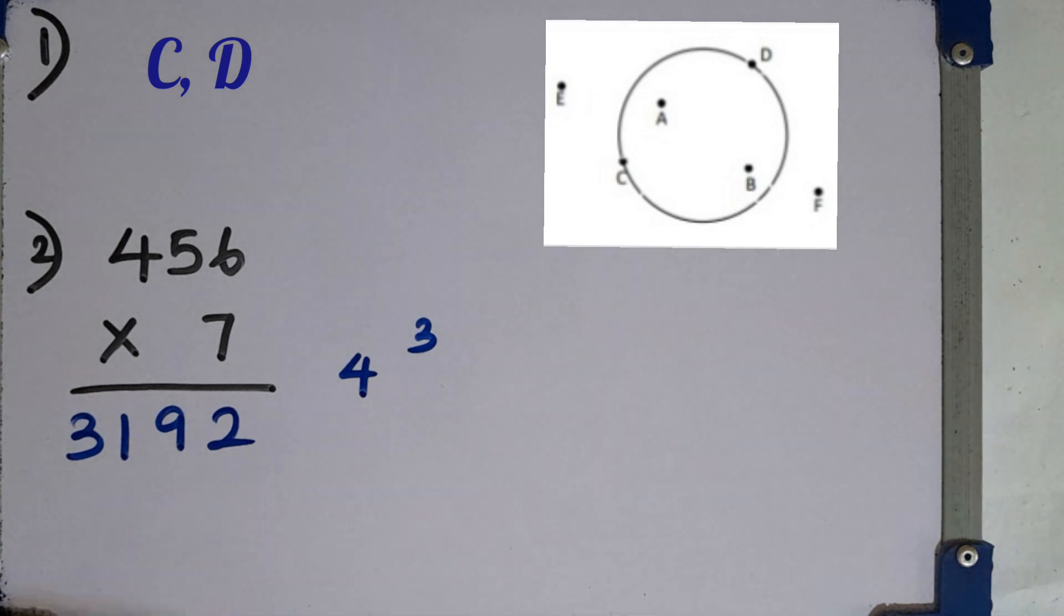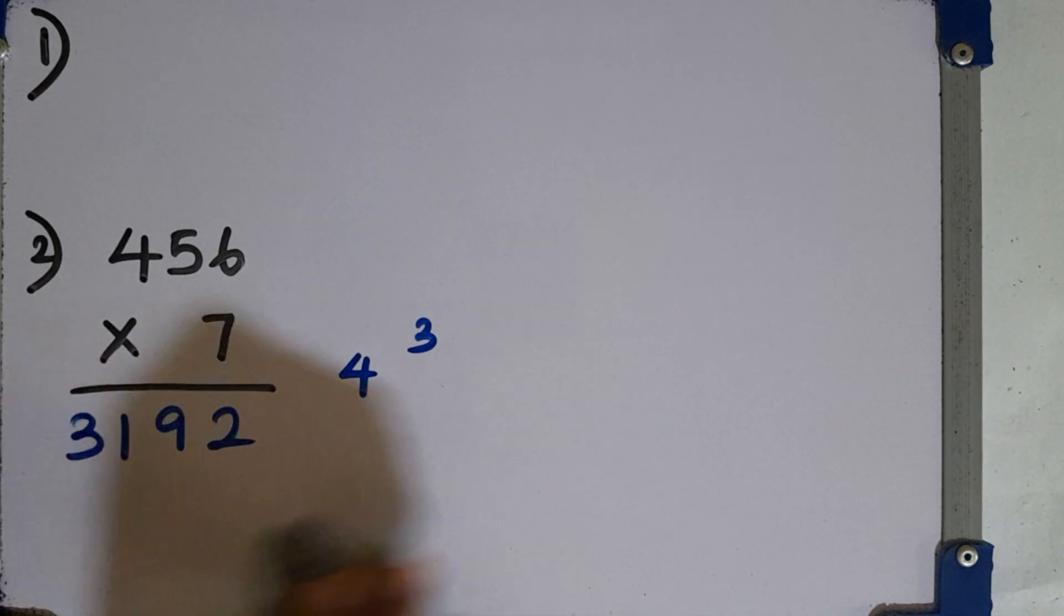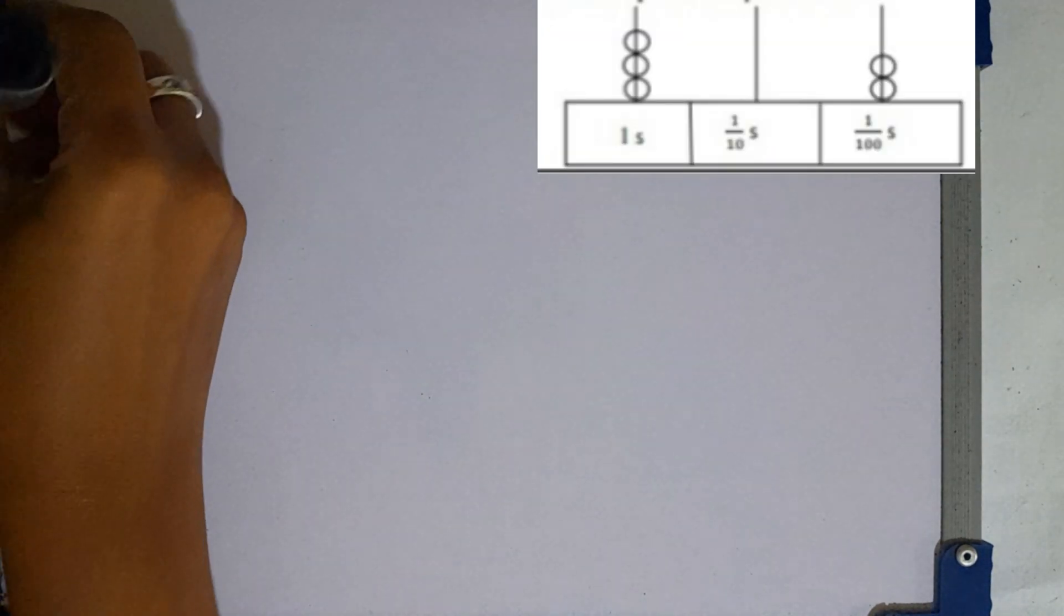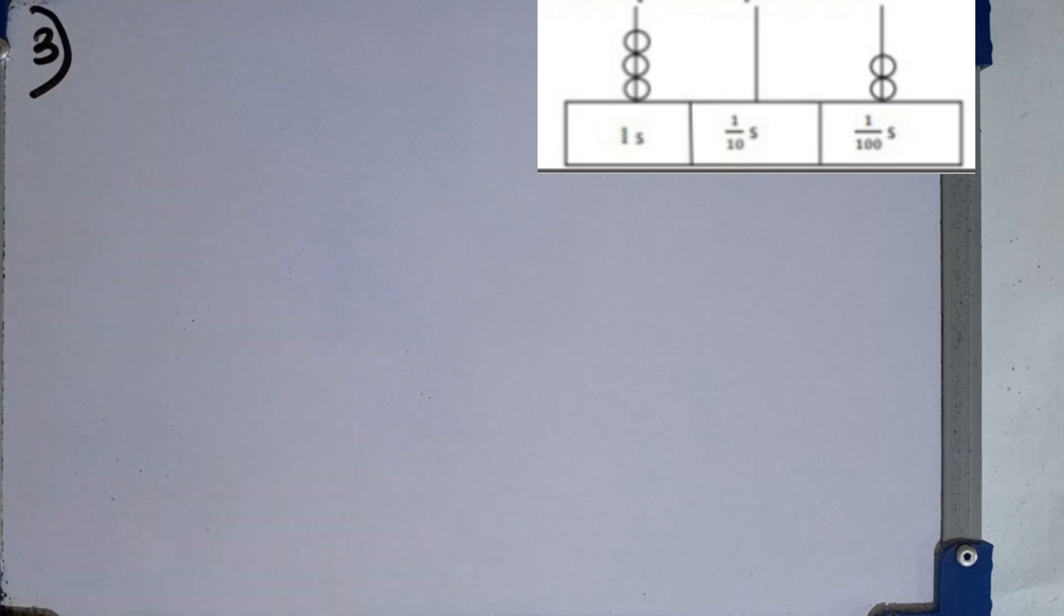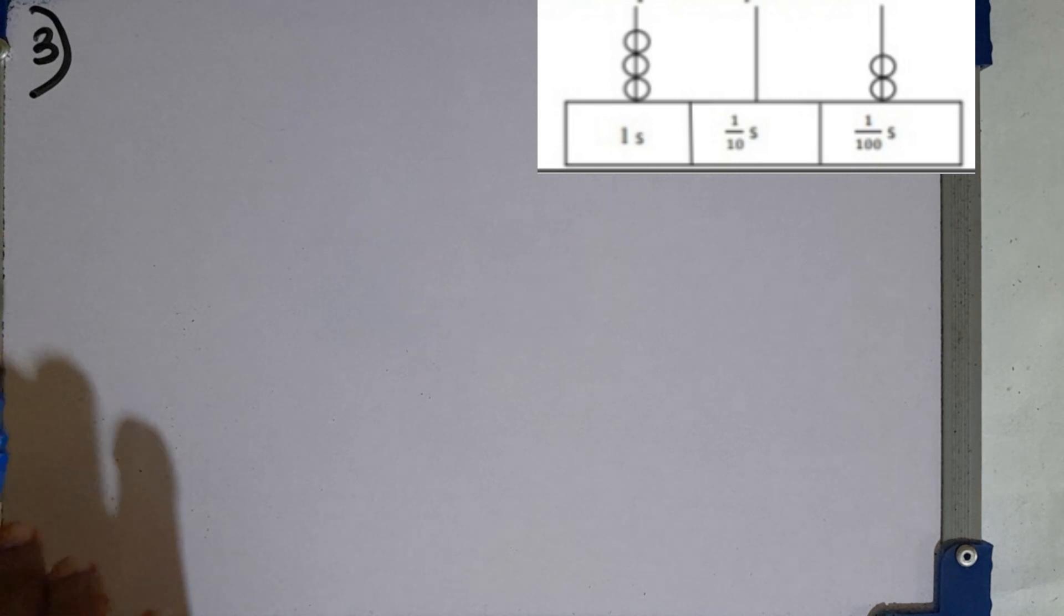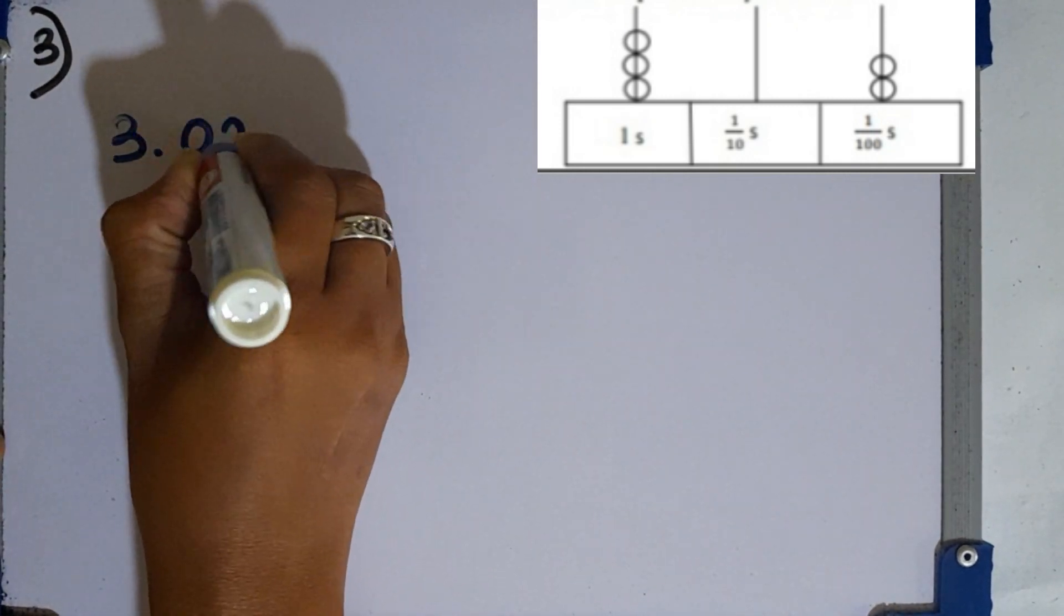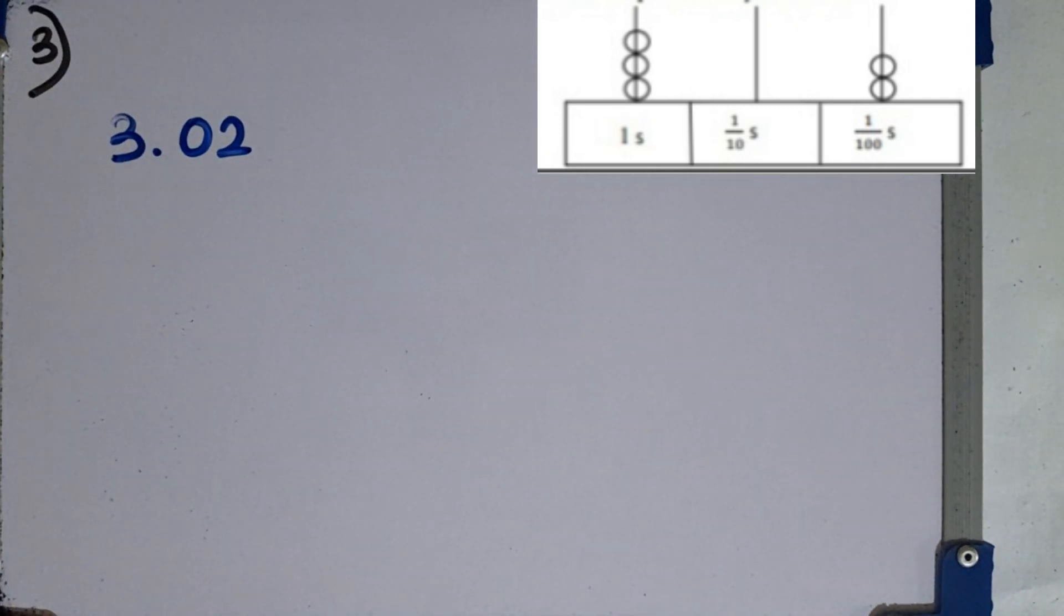Then third question. For third question you are given this abacus. We are asking write the decimal number represented by the abacus. What is the decimal number represented here? 3.02. This is the decimal number.